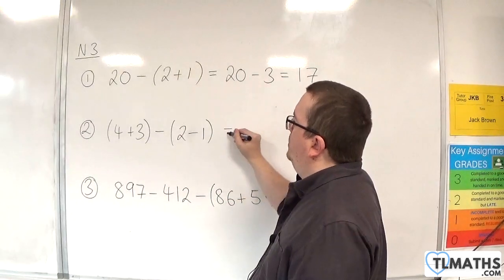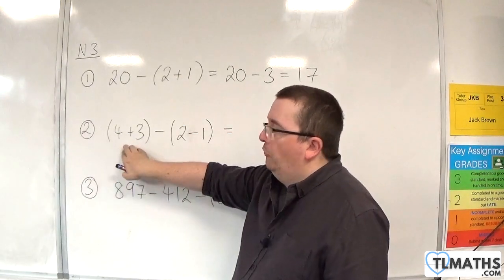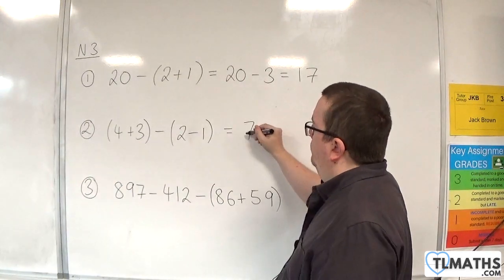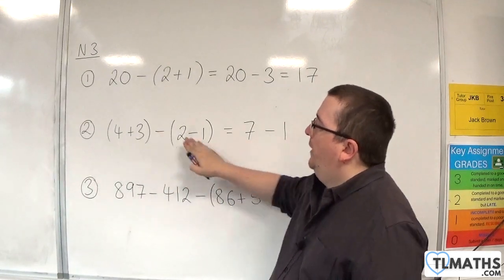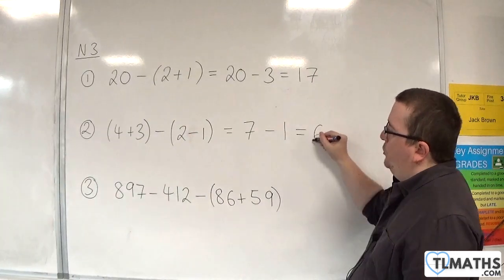With number 2, we've got to do the brackets first. 4 plus 3 is 7. 2 minus 1 is 1. So we have 7 take away 1, which is 6.